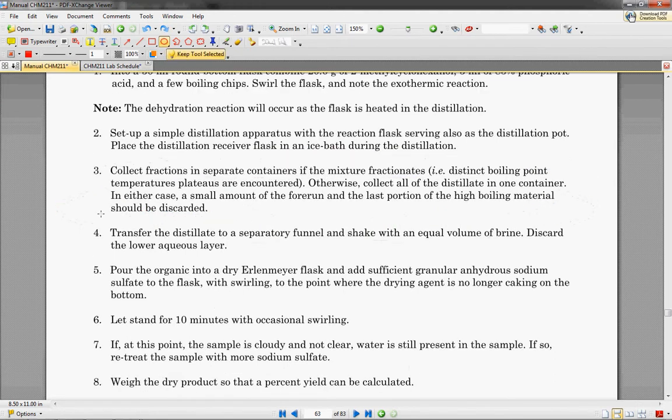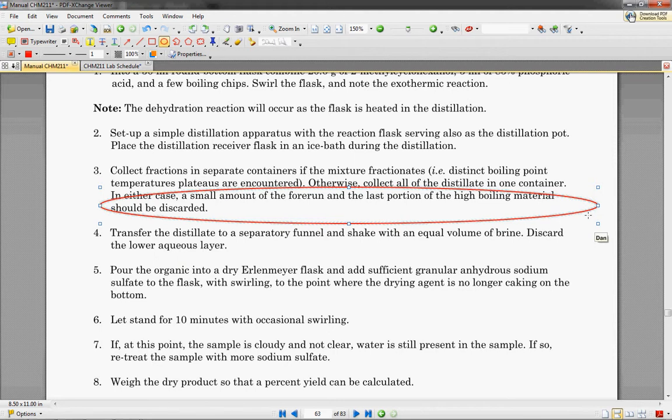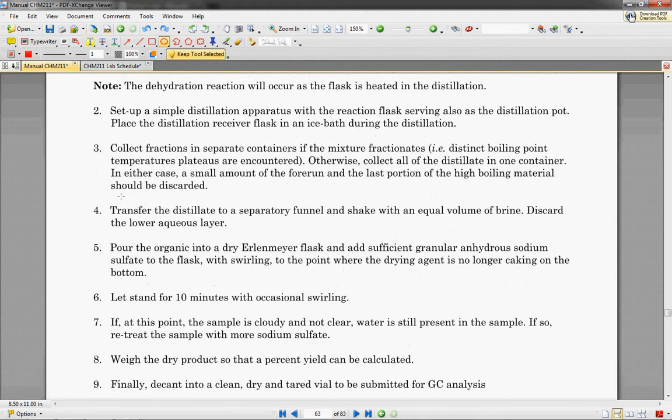Once you've gotten all your fractions, a small amount of the forerun and the last portion of the high-boiling material should be discarded. That's just to get rid of small impurities that you may have.